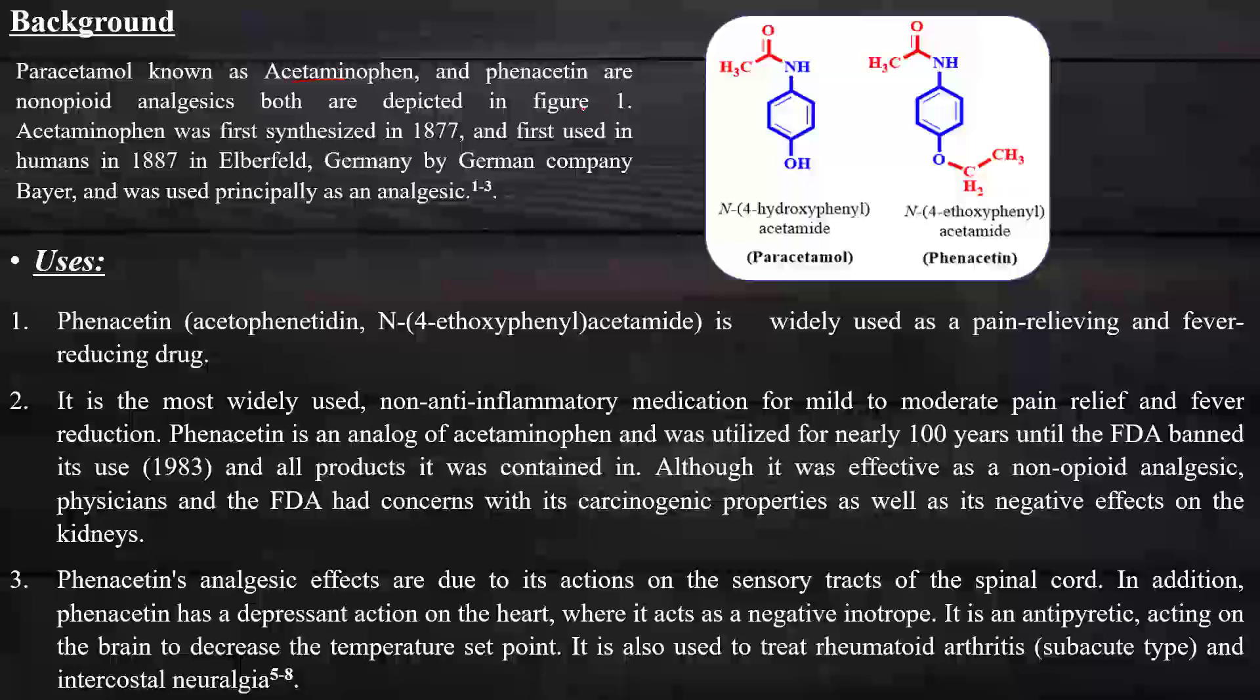Paracetamol, known as acetaminophen, and phenacetin are non-opioid analgesics. Both are depicted in figure one. This is both structures. The difference is only the OH and OC2H5. Acetaminophen was synthesized in 1877 and first used in humans in 1887 by the German company Bayer, and it was principally used as an analgesic drug.